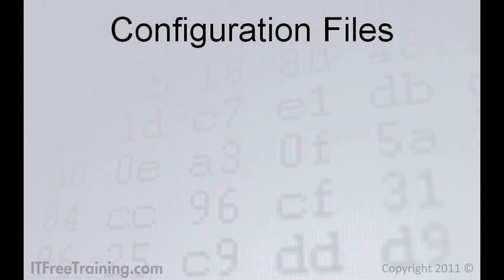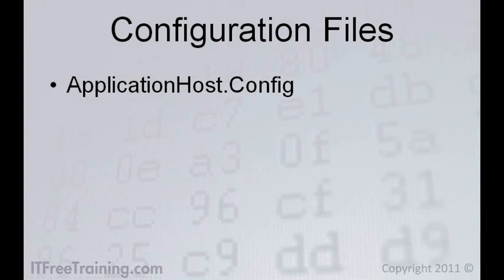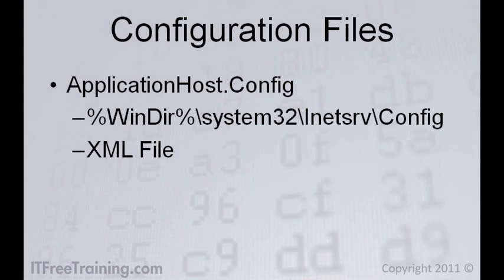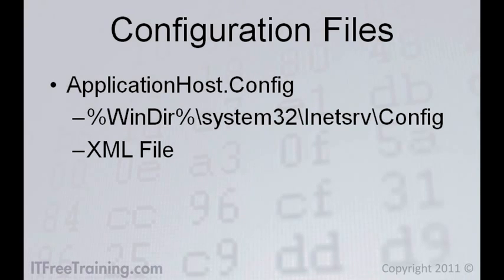With IIS 7, all the configuration on the server is held in a file called applicationhost.config, located under the system32\inetsrv\config directory under the Windows directory. The file is based on XML format, which means it can easily be copied from one IIS setup to another. Being a text file also means you can easily back up and restore the configuration file as required. You can edit it in a text editor, but you are better off using the admin tool or command line tools where possible. If you do edit it with a text editor, make sure you back up the file first. After restoring the configuration file to a server, restart the IIS service to make sure changes take effect.